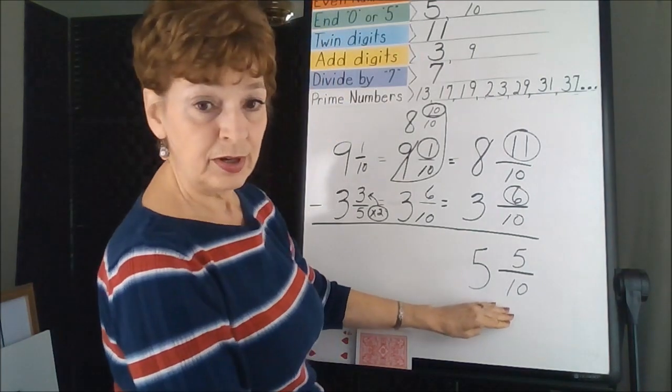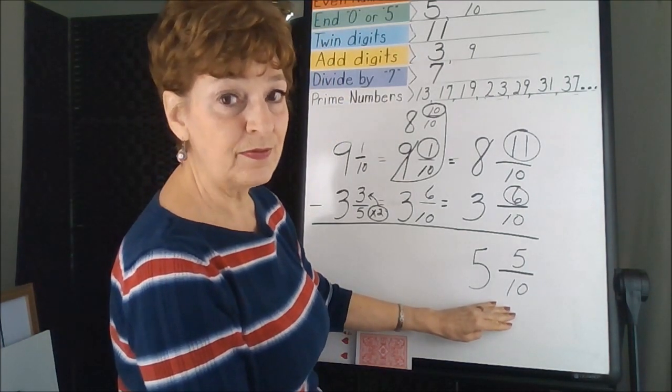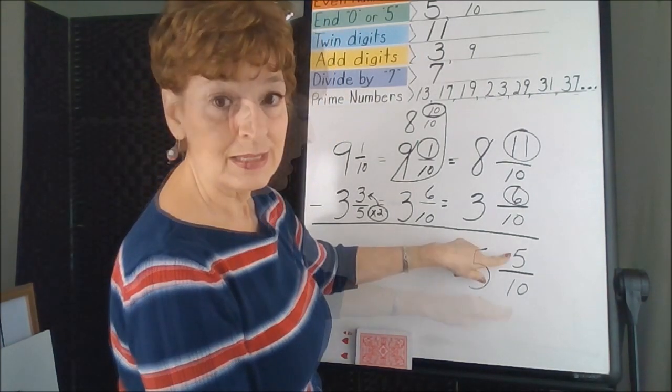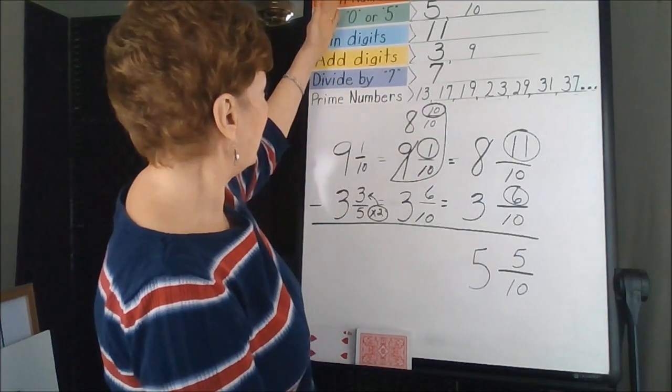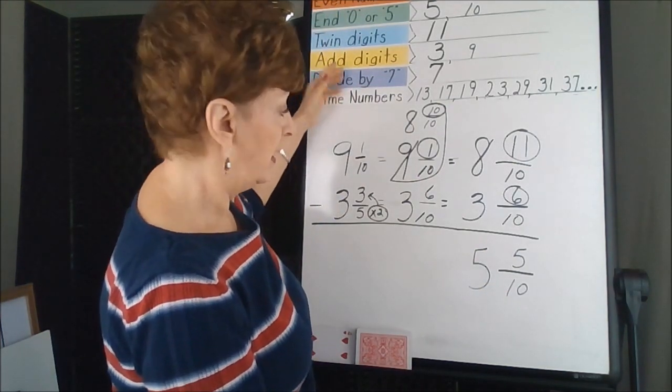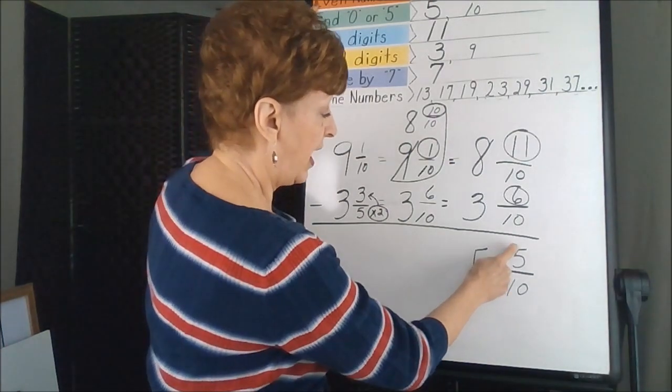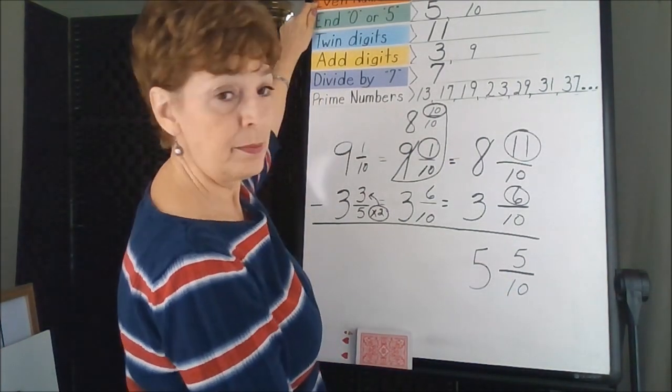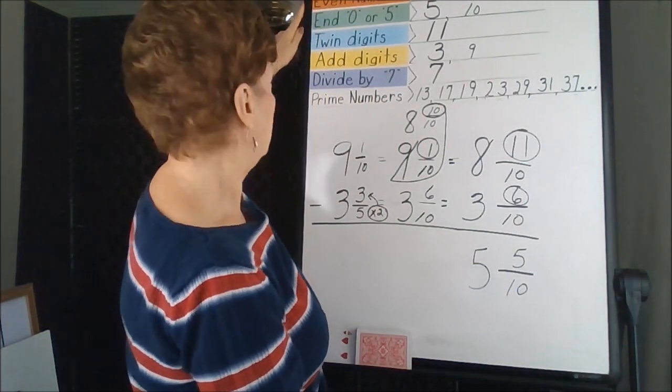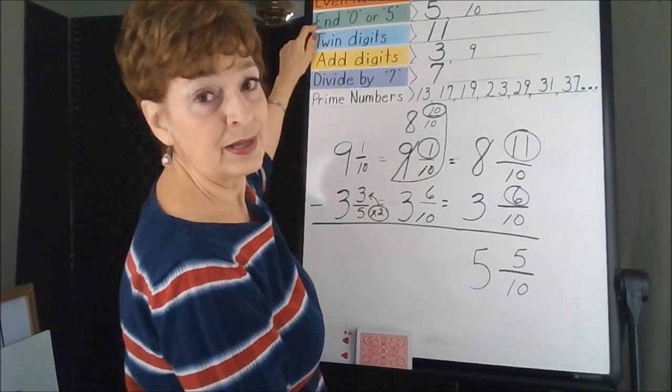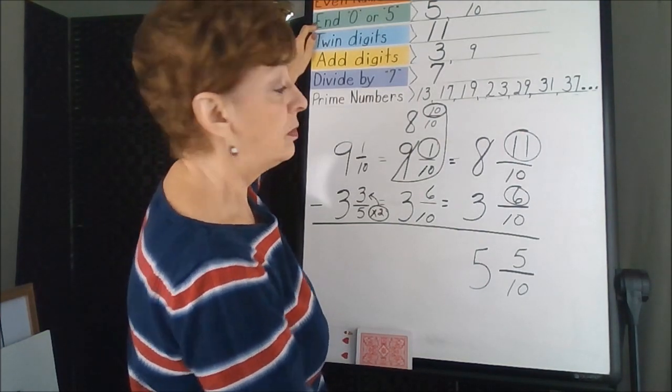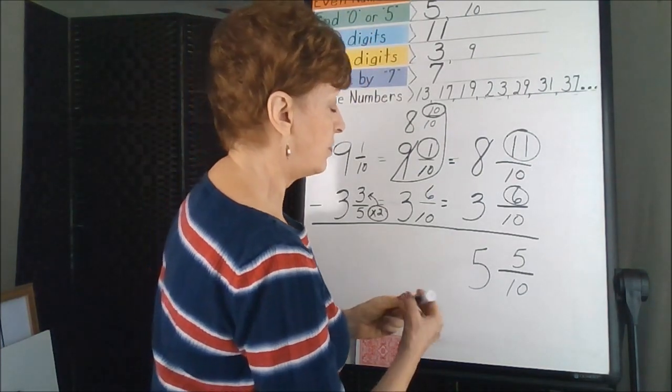The last thing we're going to do is put it in simplest form, lowest terms. This numerator is smaller than the denominator, so it follows the divisibility rules. Does 5 and 10, are they even numbers? No. Do they both end in either a 5 or a 0? Yes. So we can use a 5 on this one.